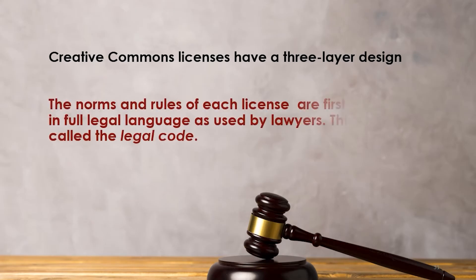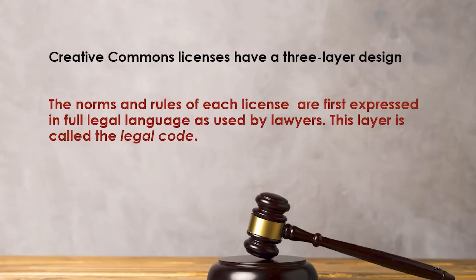The norms and rules of each license are first expressed in full legal language. There are three layers of license available in Creative Commons. The first layer is meant for the legal code — it is meant for people who are involved in the affairs of managing the Commons.